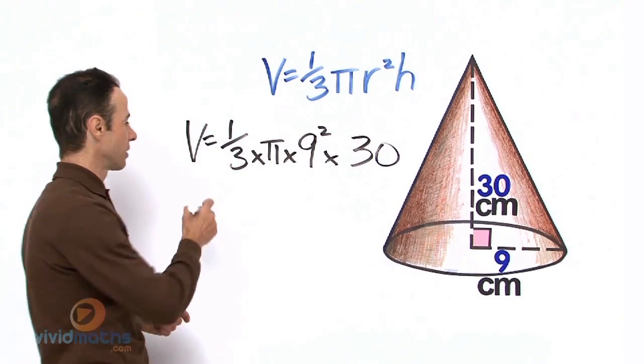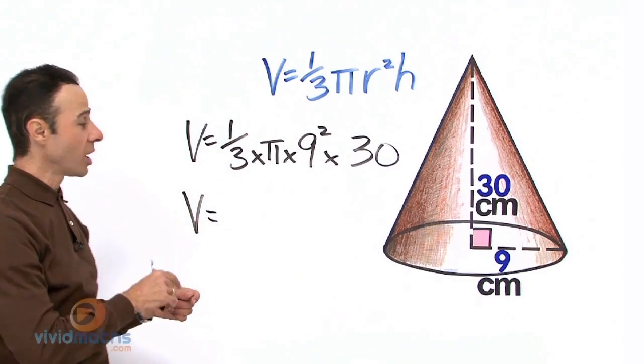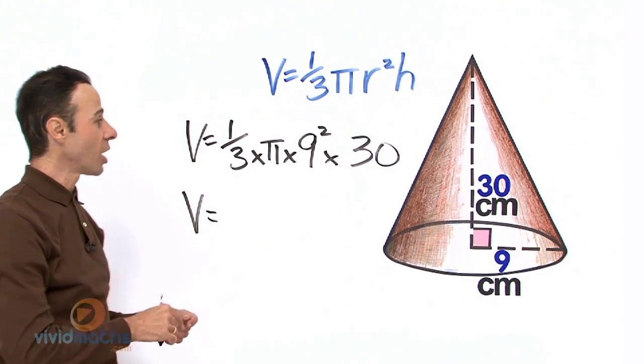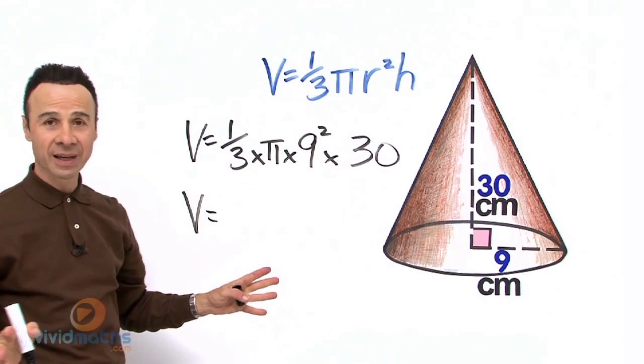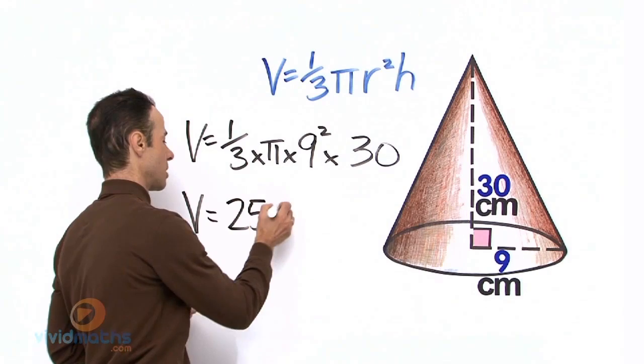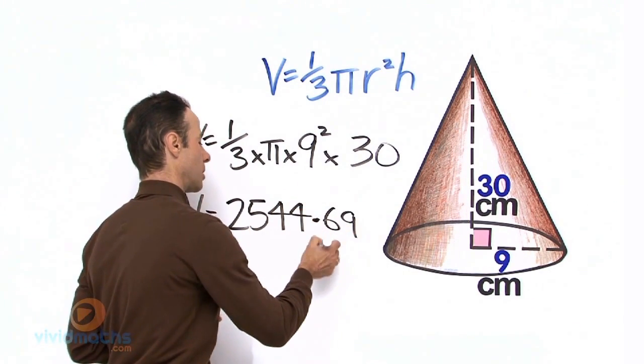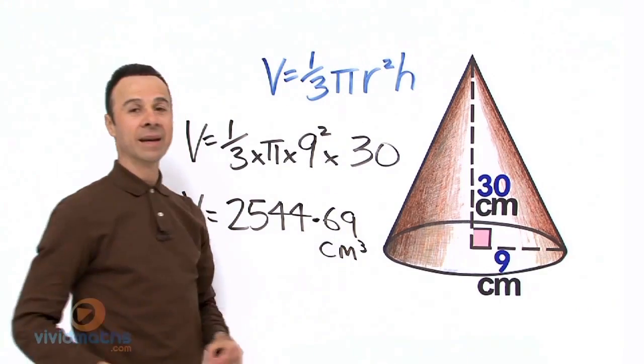So one-third times pi times 9 squared times 30, all together gives us a volume of... now we need it to the nearest centimeter cubed.